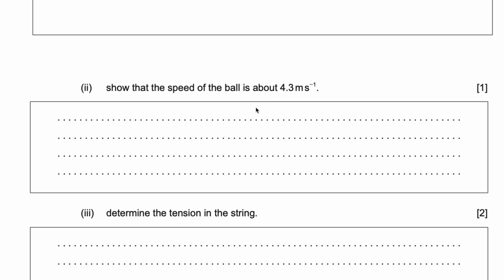To solve this question, we can use the conservation of energy principle. Energy is neither created nor destroyed, it is merely transferred, meaning the kinetic energy is equal to the potential energy. The potential energy at the top, when it swings to the bottom, is transferred into kinetic energy at the bottom. Using this principle, we can solve this question.